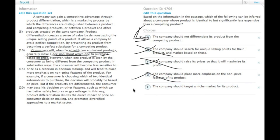And E, the company should target a niche market for its product. I don't even know what that's doing there. So clearly, choice A, you should not differentiate your product if it's already differentiated on price and is otherwise identical because people are going to choose the one that's cheaper.